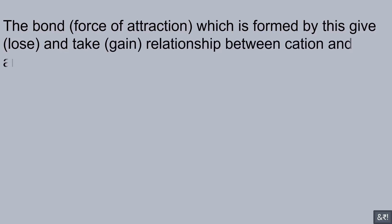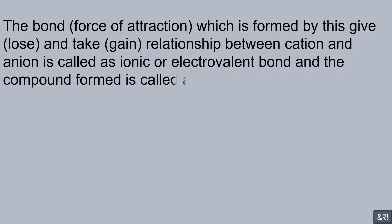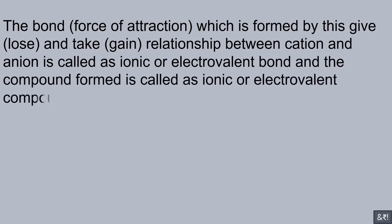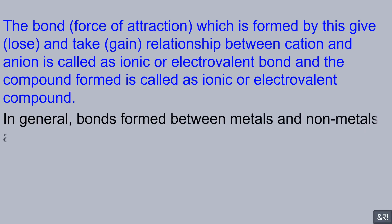The bond — the force of attraction — formed by this give-and-take relationship: the bond between a cation and an anion is called an ionic or electrovalent bond, and the compound formed is called an ionic or electrovalent compound. In general, bonds formed between metals and non-metals are ionic or electrovalent.